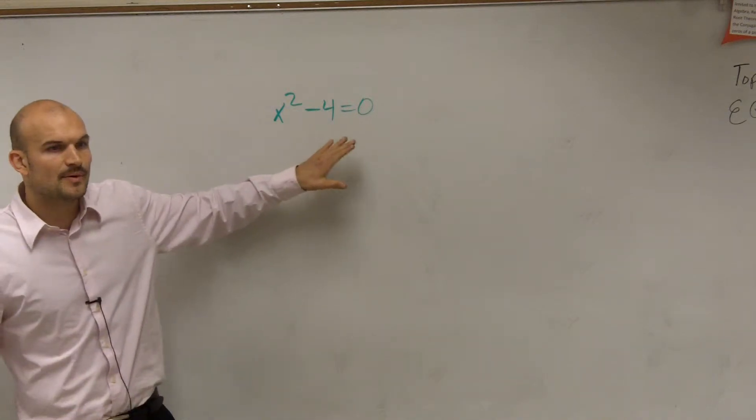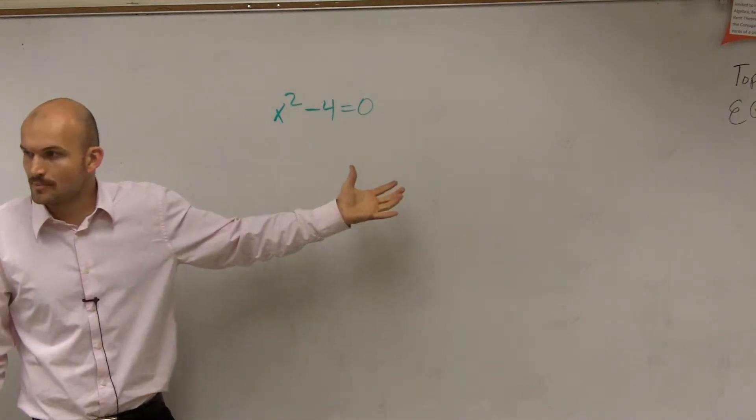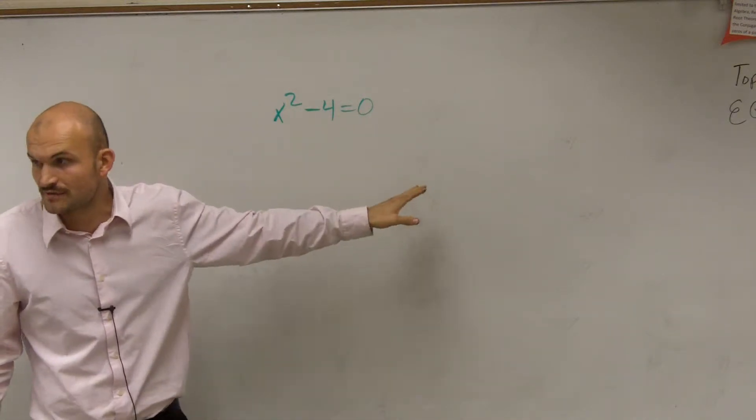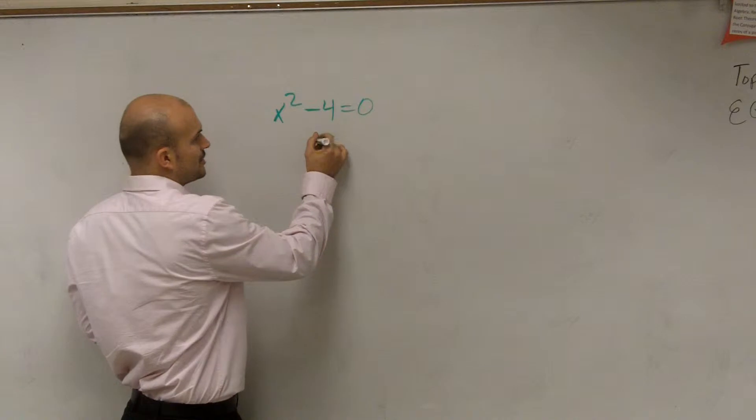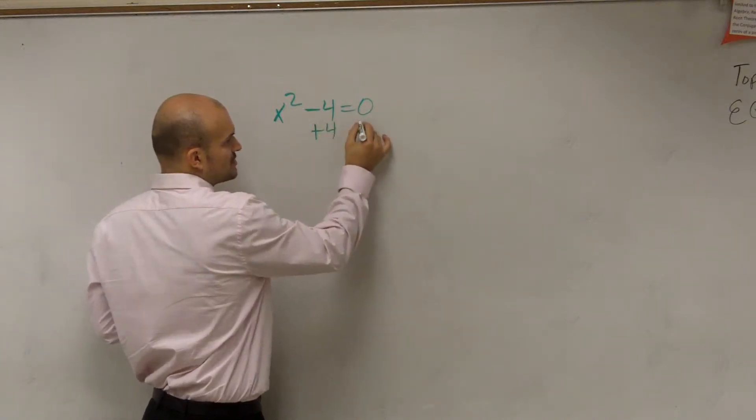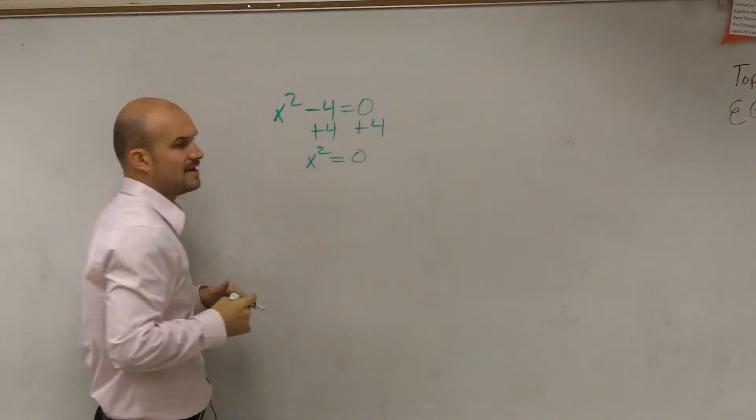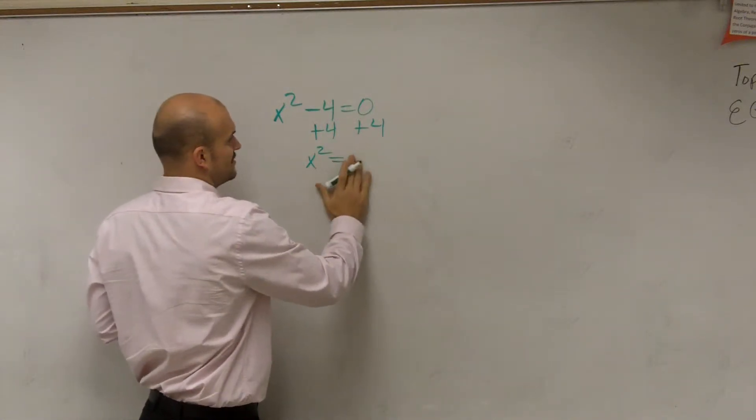However, when we have problems where we only have one variable, we can just use the inverse operations. So if I said solve this, or find the roots of this equation, what I can do is use inverse operations. Add 4 to both sides by addition property of equality.